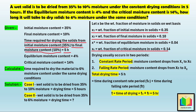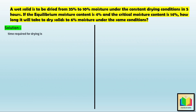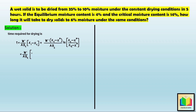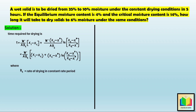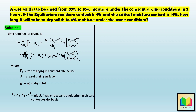We know the formula for drying time for a constant rate period and falling rate period. The formula for the time required for drying is: T = (W'/ARC) × [(X1 − XC) + (XC − X*) × ln((XC − X*)/(X2 − X*))], where RC is the rate of drying in the constant rate period, A is the area of the drying surface, W' is kilograms of dry solid, and X1, X2, XC, and X* are the initial moisture, final moisture, critical moisture, and equilibrium moisture content on a dry basis respectively.